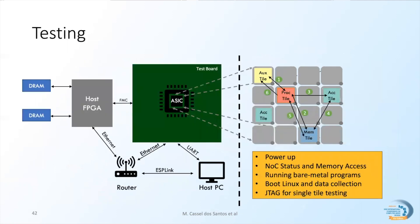Our testing environment connects through FMC the chip board into an FPGA board that channels to DRAM memory. A host PC sends the bootloader to the chip and the program and data to the DRAM through Ethernet. The UART interface gathers the chip response to the PC. This environment allows simple tests such as NoC status and memory access, as well as complex tests such as running bare metal and booting Linux to run full applications. In case of testing issues, each tile has a JTAG model that bypasses the NoC to directly access the tiles. Thanks to the synergy of the verification and testing methodology, the ESP architecture, and ESP tools such as ESP-Link, we were able to run Linux within two weeks of receiving our first chip.